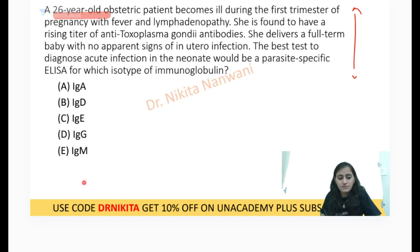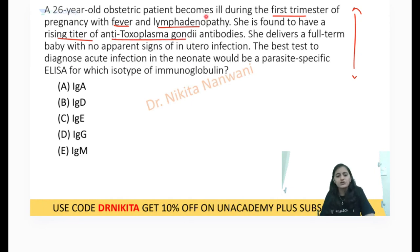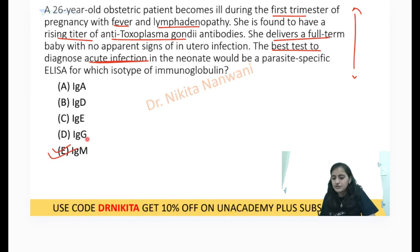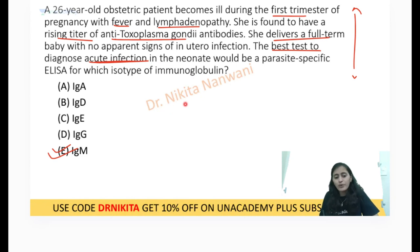There is a 26-year-old obstetric patient in her first trimester who becomes ill with fever, lymphadenopathy, and a rising titer of anti-toxoplasma antibodies — so she has toxoplasmosis. She delivers the baby. The question: what is the best test to diagnose acute infection in the neonate? The answer is IgM.